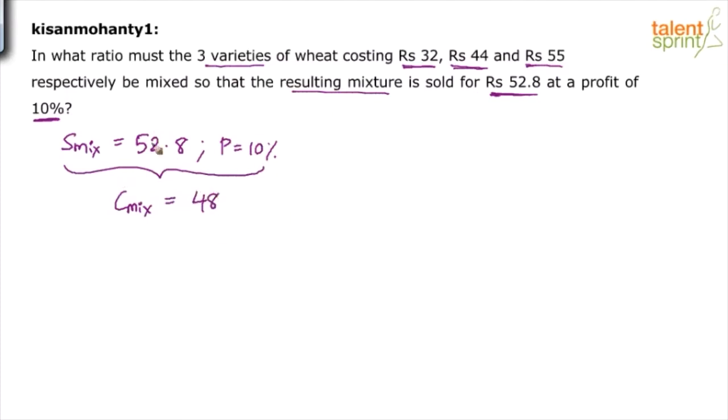You can use these two to find out the cost price of the mixture, which comes out to be 48. You can do this calculation mentally. See, 48 plus 4.8 is 52.8, and 4.8 is 10% of 48. So profit is 10%, and the total is 52.8. Clearly, the cost price is 48 rupees.